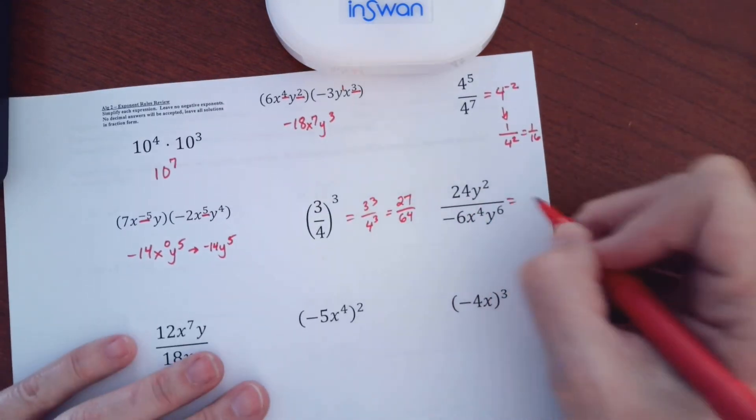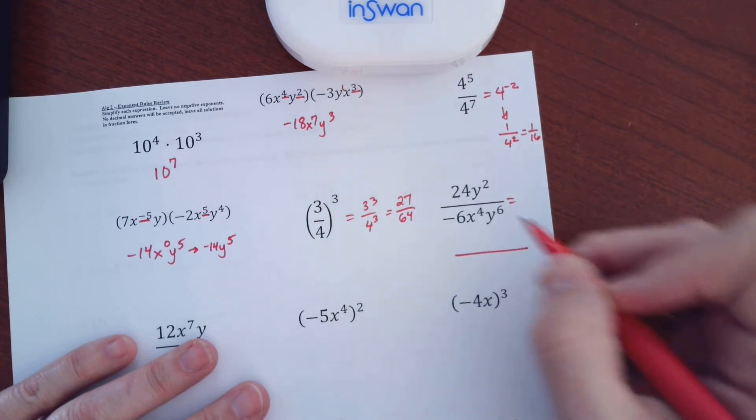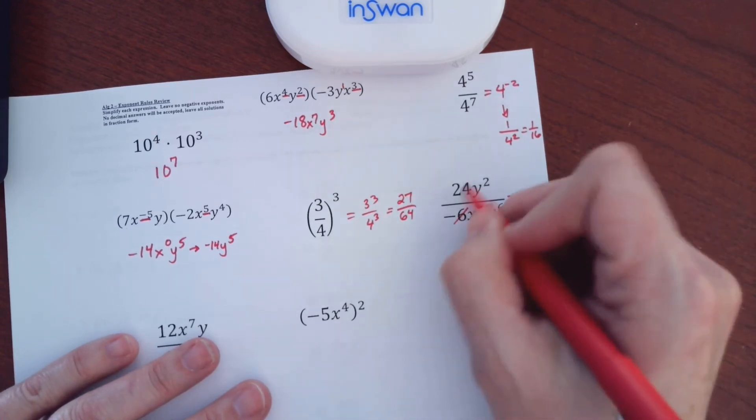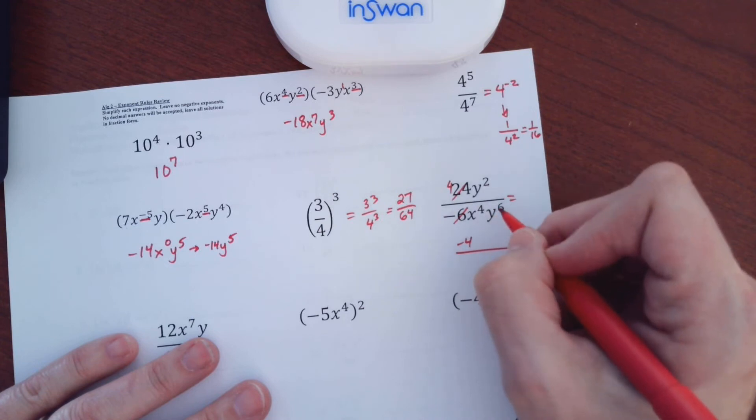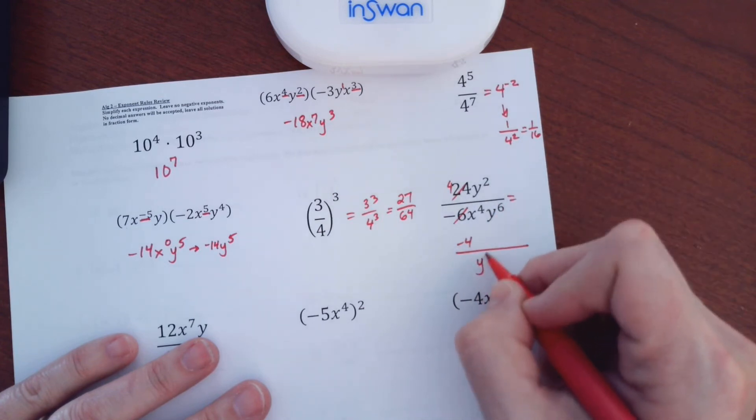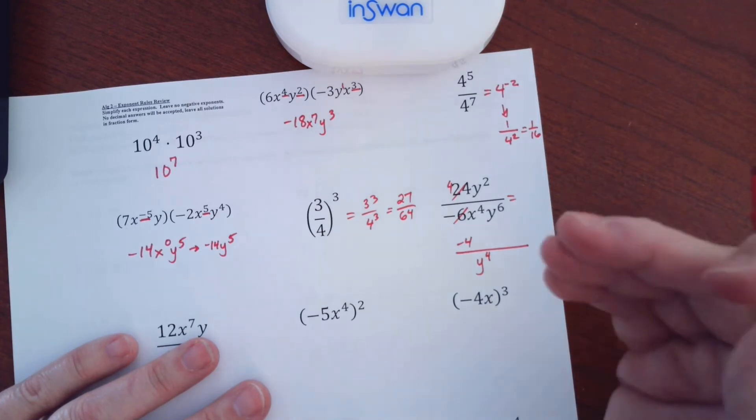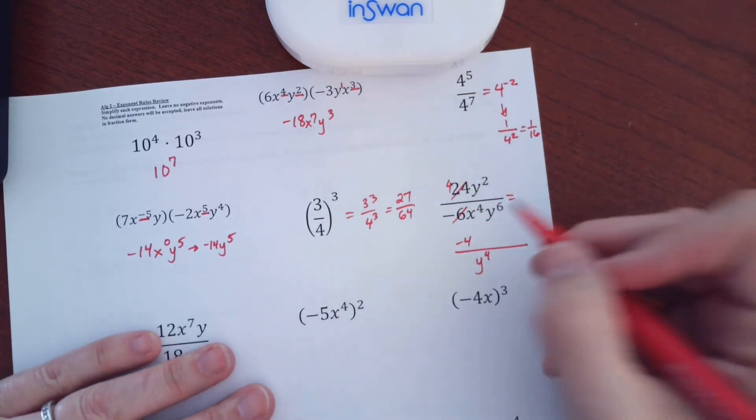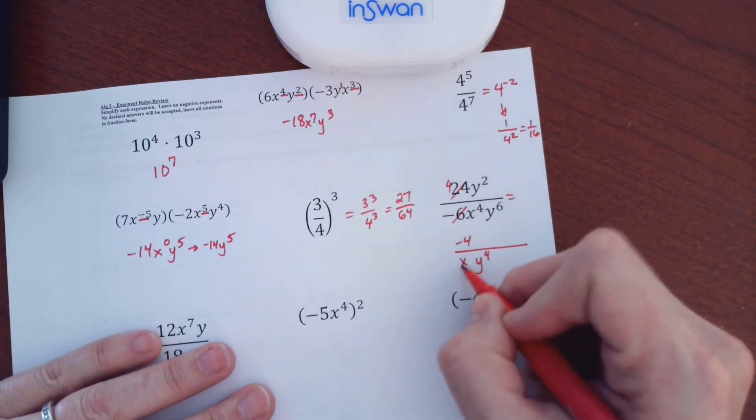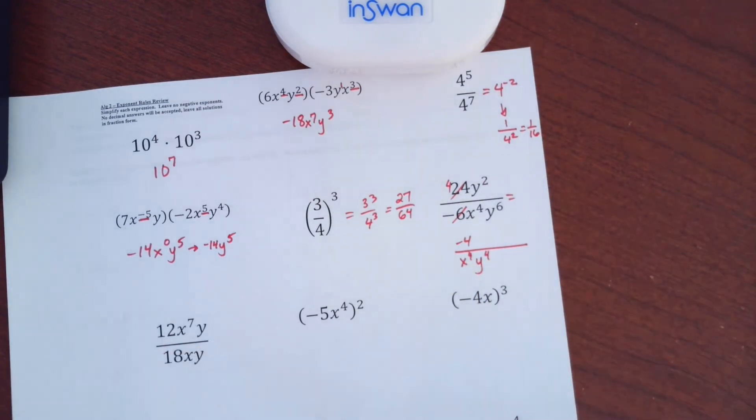All right. So division. So I'm going to subtract my exponents. Actually, I'm going to write it down here. 24 and 6, these divide to 4, and I'll put negative. Y to the second and a Y to the sixth. So 2 minus 6 is negative 4, so that means there's going to be Y to the fourth in the denominator. The negative tells me where to put it, but I don't put the negative when I'm there. And X to the fourth has no partner, so he's just going to stay down here in front or back.